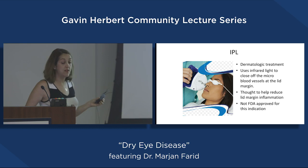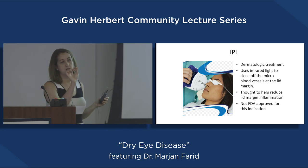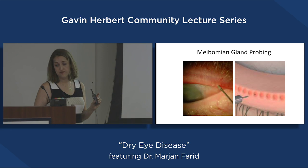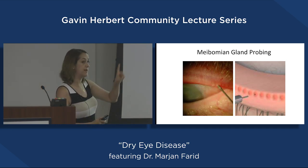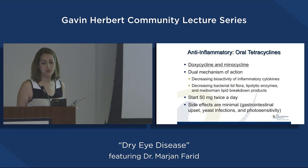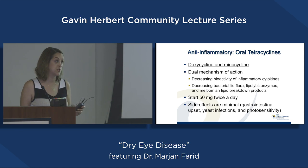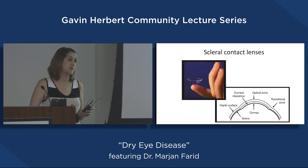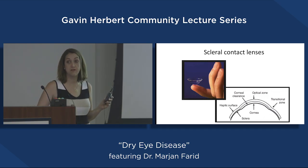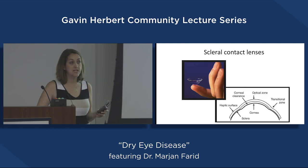IPL (intense pulsed light) is another treatment — not FDA approved — that uses light to address the blood vessels creating inflammation at the lid margin. For more severe cases, we can mechanically probe the glands to open them, though it's very painful. Oral anti-inflammatories like doxycycline, an antibiotic, are sometimes used for patients with severe oil gland disease. For the most severe cases of ocular surface disease, large therapeutic scleral contact lenses create a microenvironment of fluid between the lens and the ocular surface.